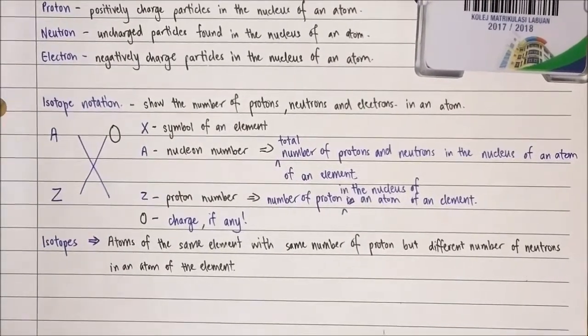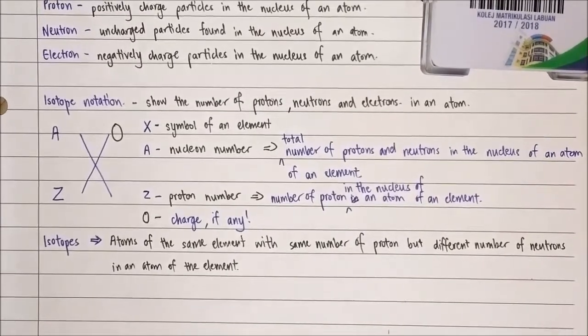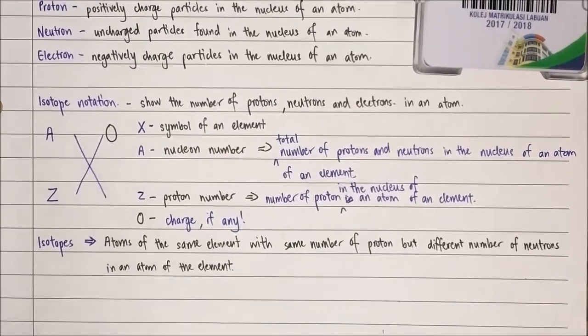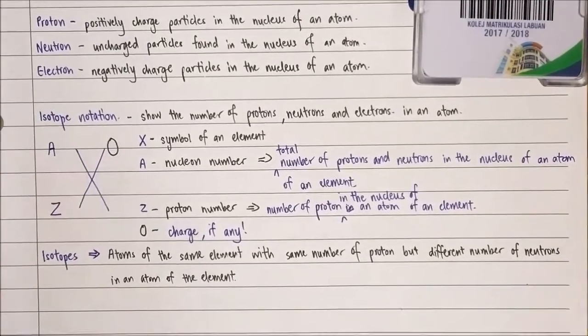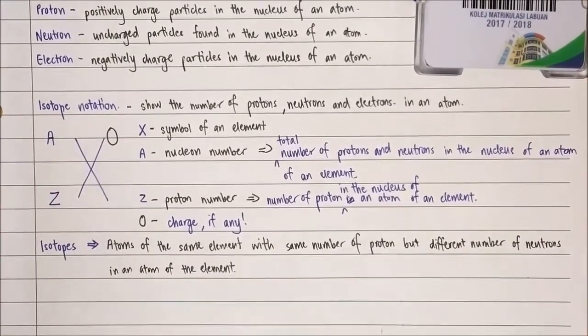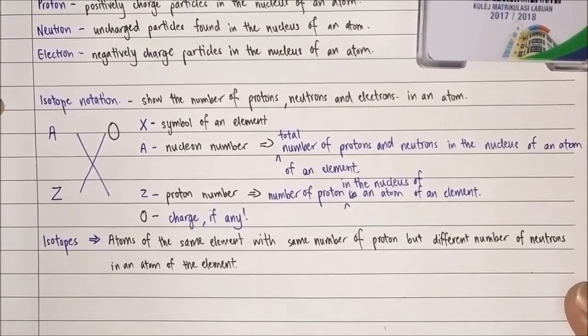For the A, the A is the Nucleon number. The Nucleon number is the total number of protons and neutrons in the nucleus of an atom of an element. For the Z, Z is the proton number. The proton number is the number of protons in the nucleus of an atom of an element.